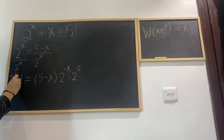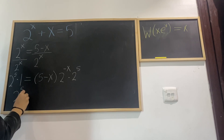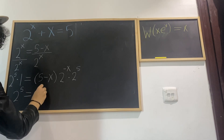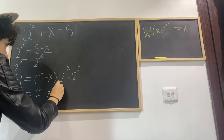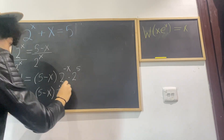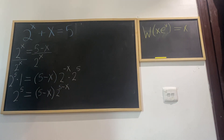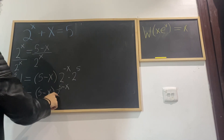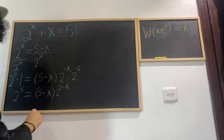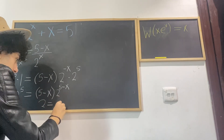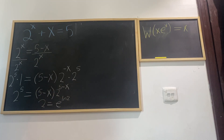Let's multiply both sides by 2 to the power of 5. So 2^5 equals (5 minus x) multiplied by 2 to the power of (5 minus x). Now the exponent equals that coefficient. We just need to change this 2 into an e. We know that 2 equals e to the power of ln 2, because e and ln cancel each other out.